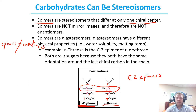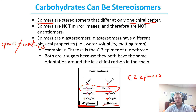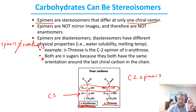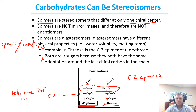Both D-erythrose and D-threose are D sugars. This refers back to our penultimate carbon — the second-highest numbered carbon, which in this case is C3 because we have a total of four carbons. Carbon number three in both structures has the OH group on the right-hand side. That indicates that these are both D sugars.